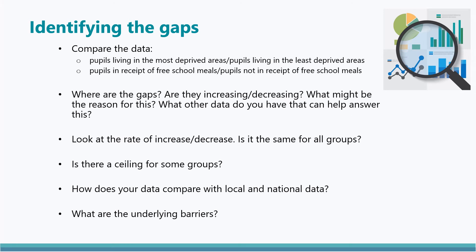To quantify the poverty-related gaps, comparisons should be made with pupils least affected by poverty — for example, data for those in receipt of free school meals compared to the data for pupils not in receipt of free school meals, and data for pupils living in SIMD deciles 1 and 2 compared to the data for pupils living in SIMD deciles 9 and 10. Schools should also compare the data for their pupils most affected by poverty to the local and national data for that same group.